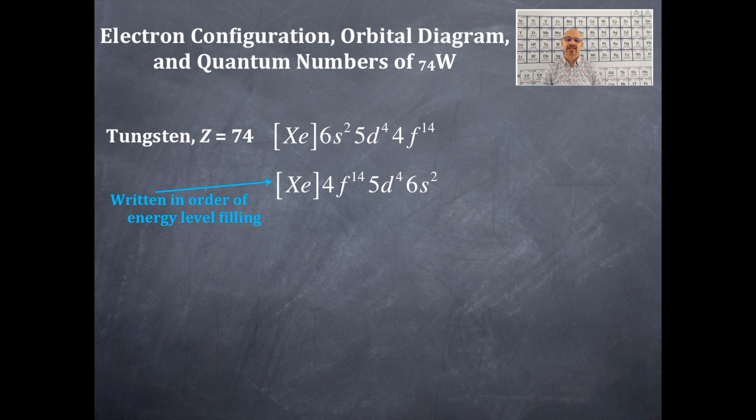It's the largest principal quantum number, 6, and it's 6s². If you look at the top one, the 6s² is interior. That's just how we write it as we count up to atomic number 74. Either way is correct. Both are perfectly 100% correct.